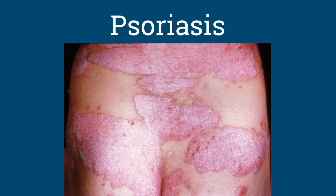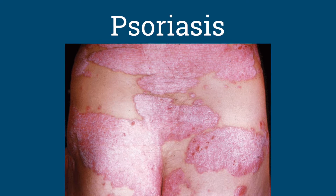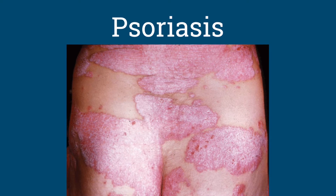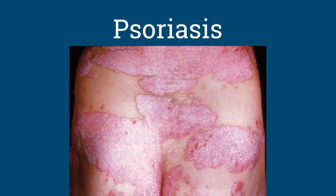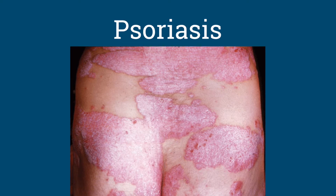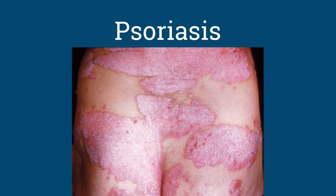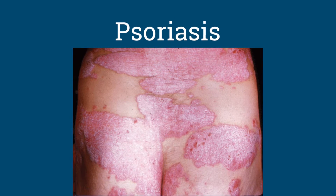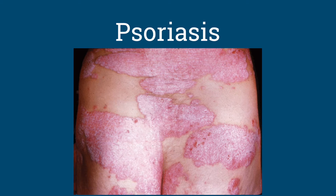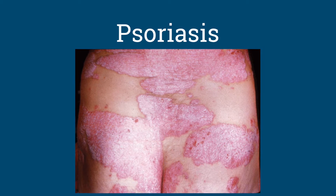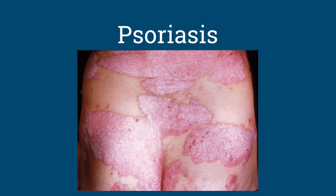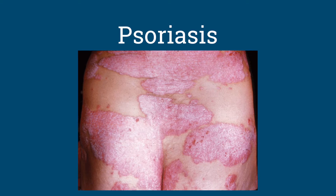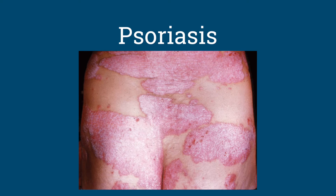Our first topic is psoriasis, which is distinguished by sharply marginated erythematous silvery scaly plaques. This can be described as a common chronic persistent or relapsing skin condition, and our topic is going to cover the genetic and the environmental causes of this pathophysiology.